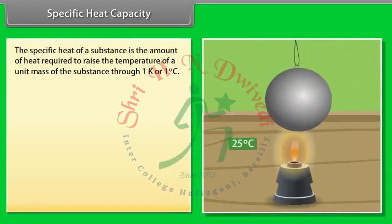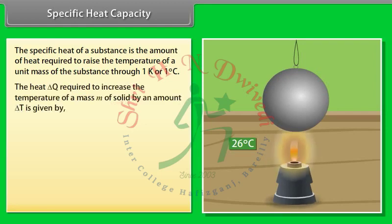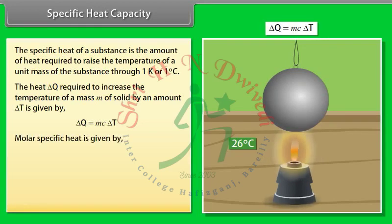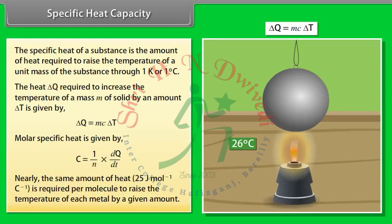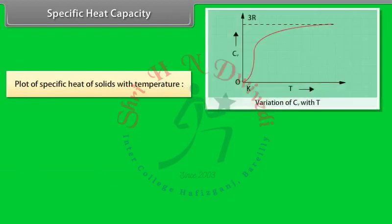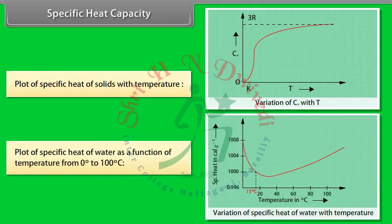The specific heat of a substance is the amount of heat required to raise the temperature of a unit mass through 1 Kelvin or 1 degree Celsius. The heat ΔQ required to increase the temperature of mass M by ΔT is given by ΔQ = McΔT. Molar specific heat is given by C = (1/N)(dQ/dT). Nearly 25 J/mol/°C is required to raise the temperature of each metal by a given amount. The specific heat of water as a function of temperature from 0°C to 100°C has also been plotted.